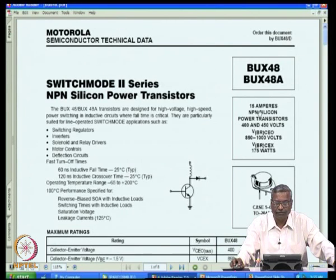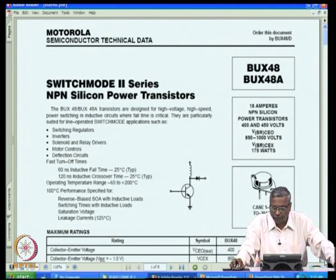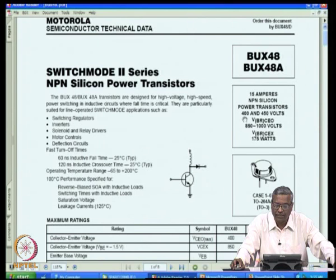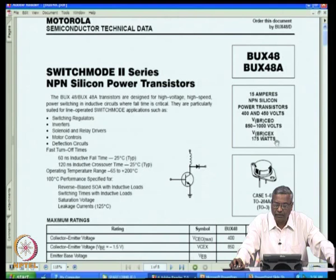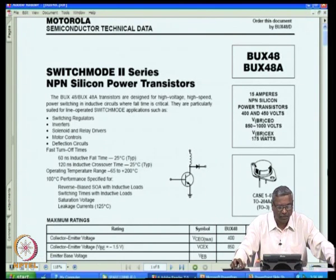The datasheet shown is for BUX48 and BUX48A — power transistors very popular 20 to 30 years back. The BUX48 is rated 400 volts and the BUX48A is 450 volts, with 15 amperes on the collector. It is an NPN silicon transistor capable of operating with large power — dissipation up to 175 watts. Applications include switching regulators, inverters, drivers, motor controls, deflection circuits in TV, fast turn-off timers, and so on.